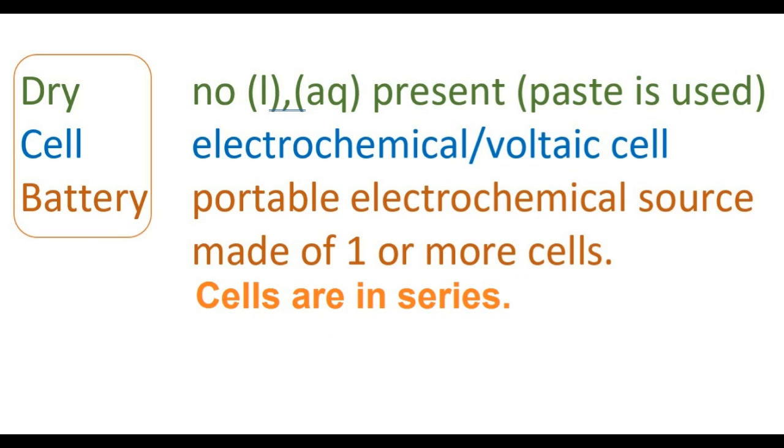So what is a dry cell battery? Well, dry means there's no liquid or solution present, it's just a paste. A cell is shorthand for electrochemical or voltaic cell, something that turns chemical energy into electrical energy. And a battery, according to the IB, is a portable electrochemical source made of one or more cells.